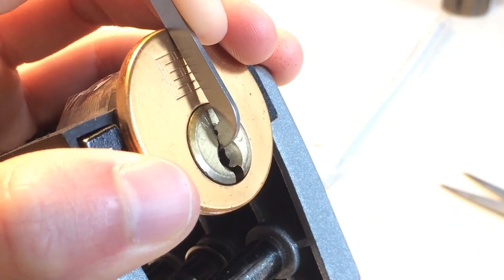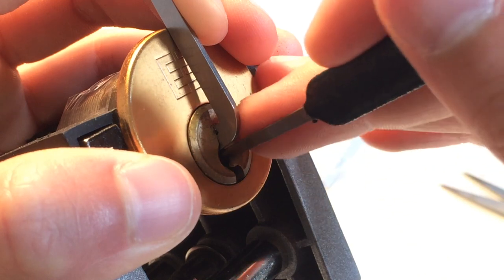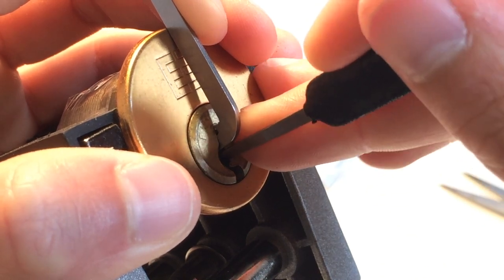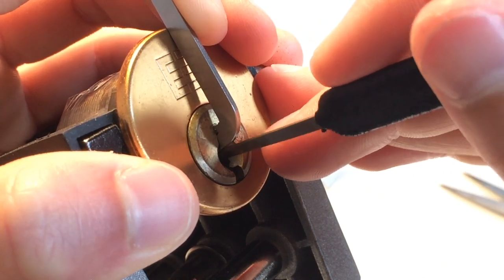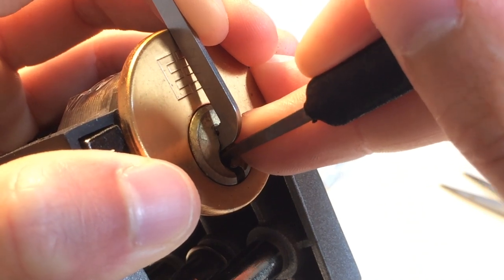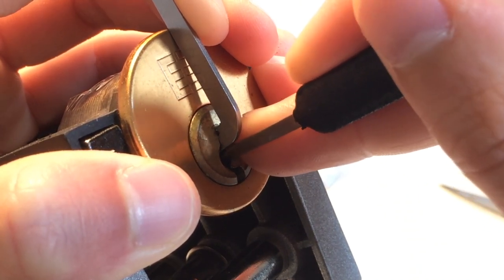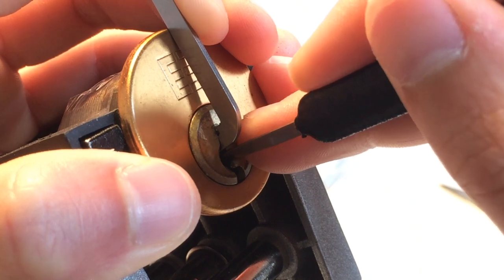Okay. So now let's move on. Pin 4 is the next binder. But in my lock, pin 4 is a very low cut. So I've got to be extra careful. There you go.